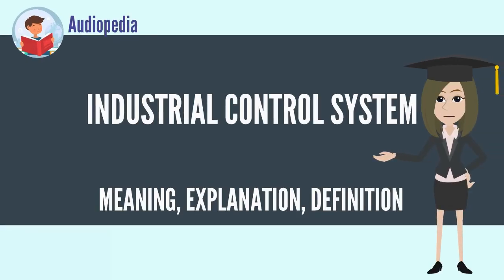An Industrial Control System (ICS) is a general term that encompasses several types of control systems and associated instrumentation used for industrial process control. Such systems can range from a few modular panel-mounted controllers to large interconnected and interactive distributed control systems with many thousands of field connections.